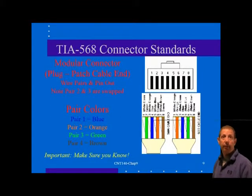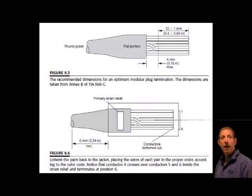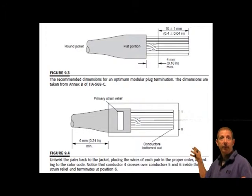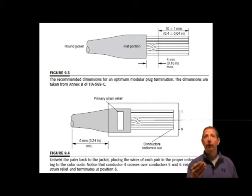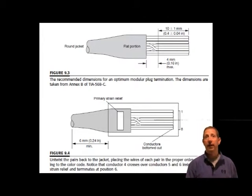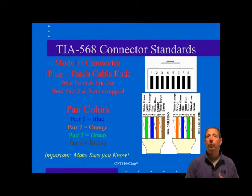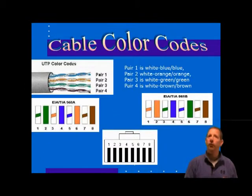The recommended dimensions for an optimum modular termination plug are taken from Annex B of the TIA 568C. Notice that the crossover of Conductor 6 occurs inside the plug, forward of the strain relief tap. This is a little different from standard practice, which places the crossover just outside the tap. Also notice the length of untwisted wire that exists between the plug body; it is this untwist that hampers the performance of the plug in very high frequency environments.